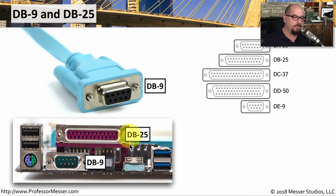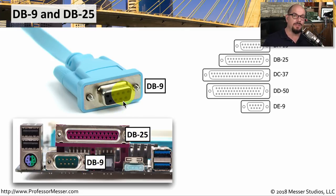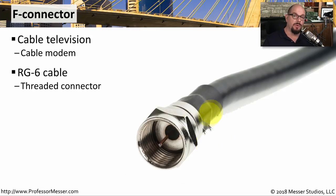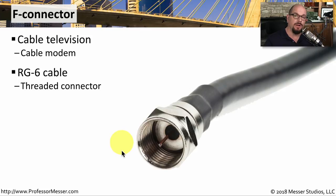Here's the back of an older motherboard that has a DB25 connector used for printing and a DB9 serial connection — that's what we would connect our cable to so that we can access a router or switch at the command line. If you've connected cable television or a cable internet modem, then you've probably brought it in through coax with an F connector at the end of the cable. It's usually brought in on something like an RG6 cable, and it uses a threaded connector. Once you twist it onto the connector, it's not coming off unless you completely untwist the F connector.